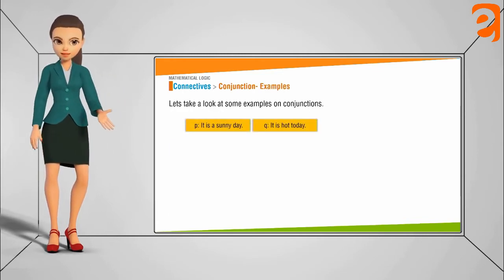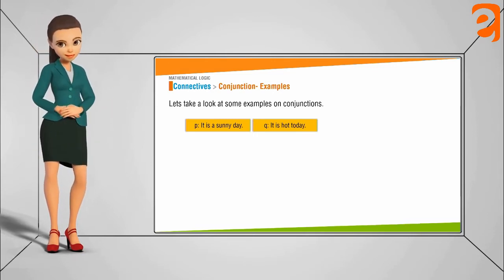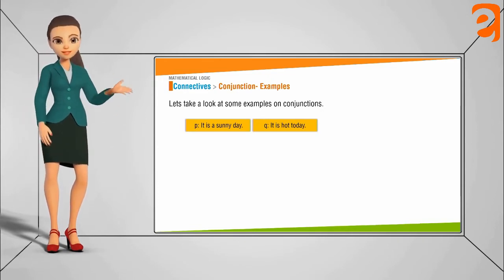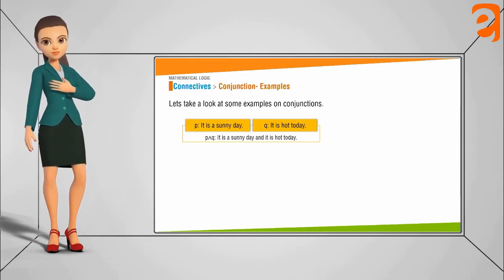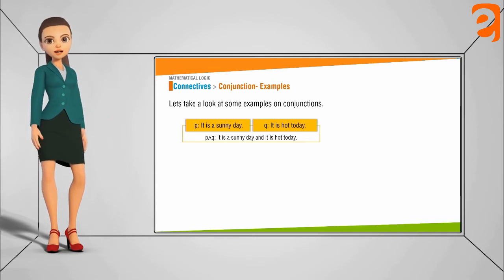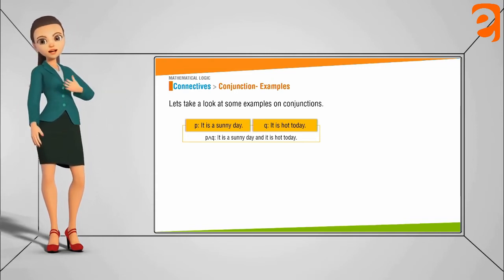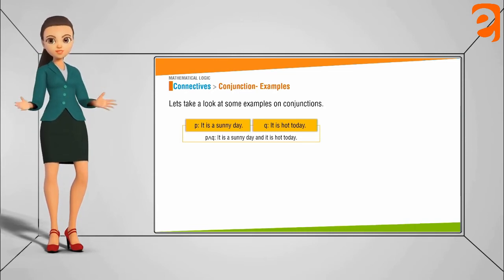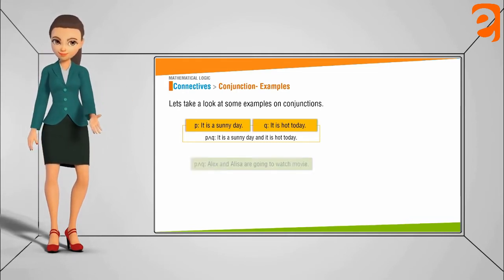Let's take some examples on conjunctions. Suppose you have two statements: 'It is a sunny day' and 'It is hot today', and we want to use conjunction to form the compound statement. We combine them with the word 'and' to get: 'It is a sunny day and it is hot today.' So this is a conjunction of statements p and q.